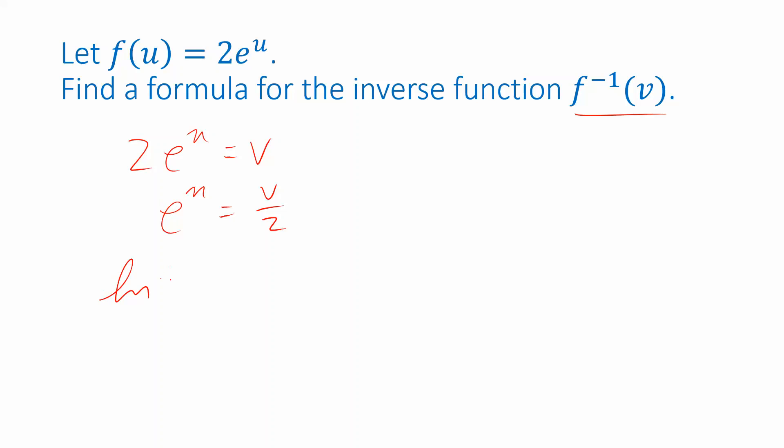So I take natural log of e to the u. I actually have to do that to both sides. Take natural log of both sides and the point is natural log of e to the u simplifies to just u. That's one of the properties of logarithms and exponentials, the way that simplifies. That was the whole reason for using a natural logarithm.